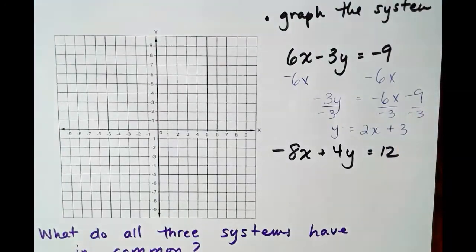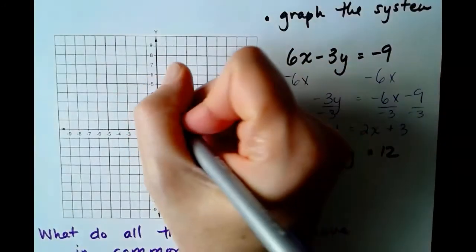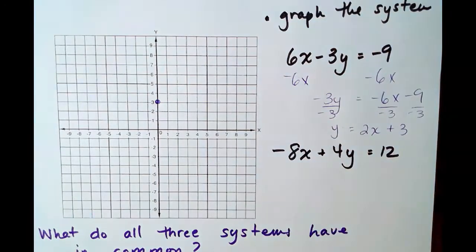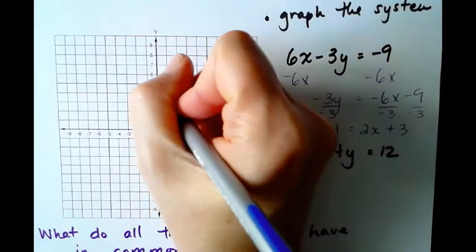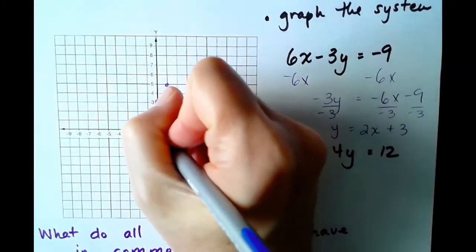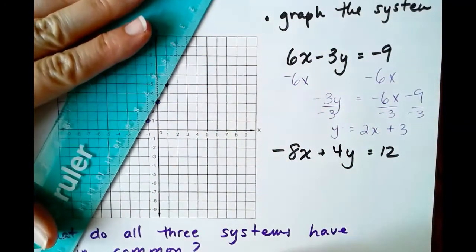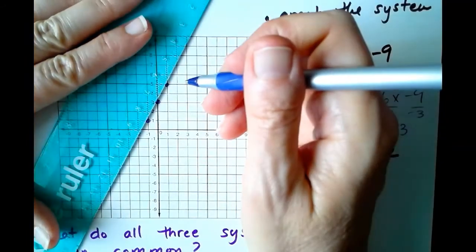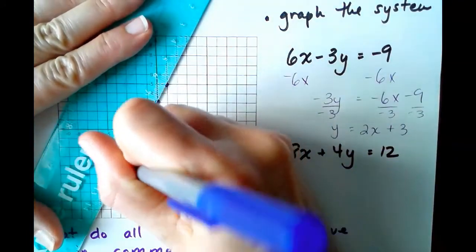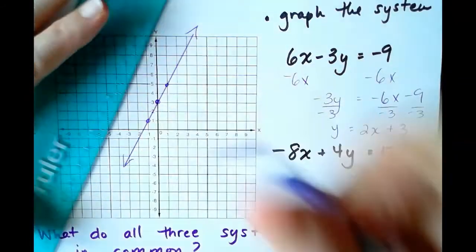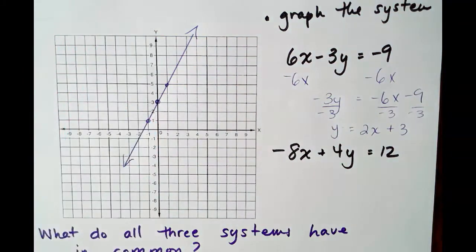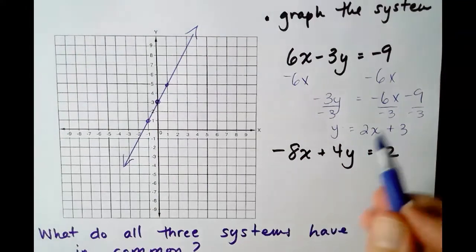So let's graph this line. It has a y-intercept at 3 and a slope of 2, up 2 over 1, down 2, back 1. We'll graph this line. And remember to do a visual check to be sure your lines are graphed correctly. If a line has a positive slope, it's going to be going up and to the right.